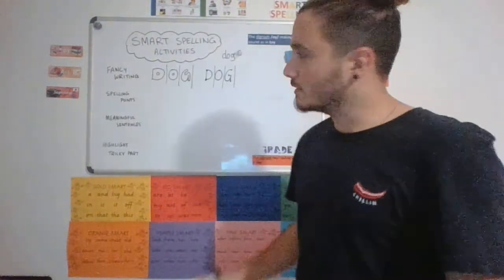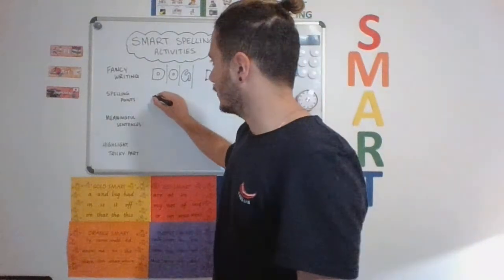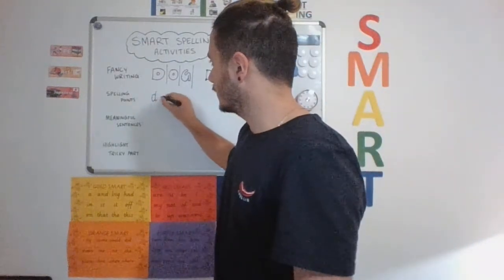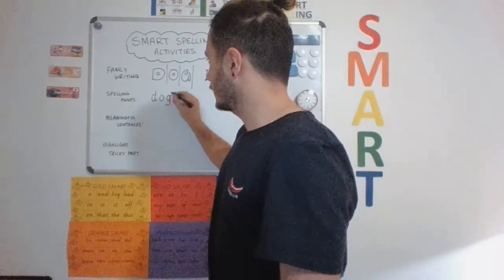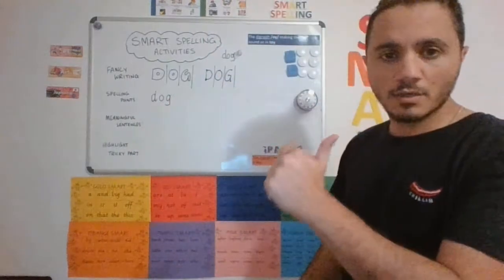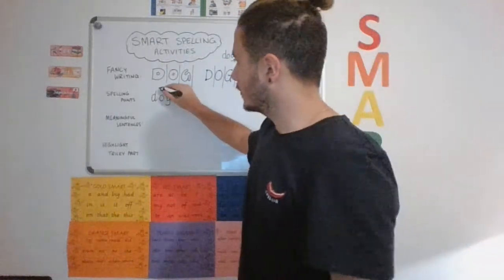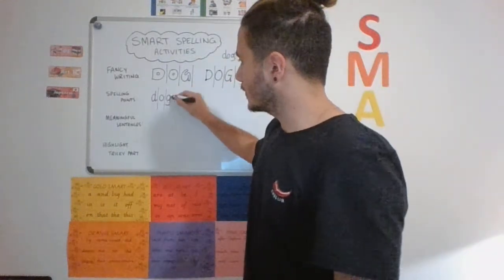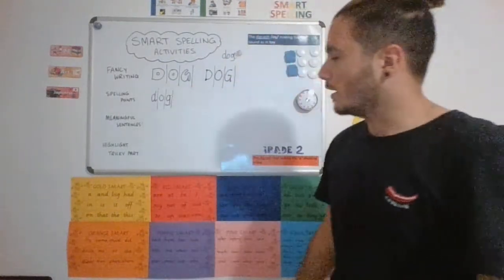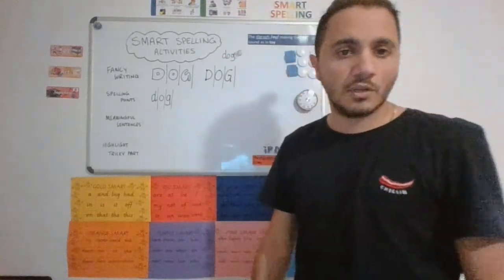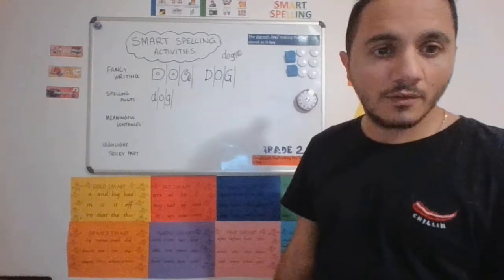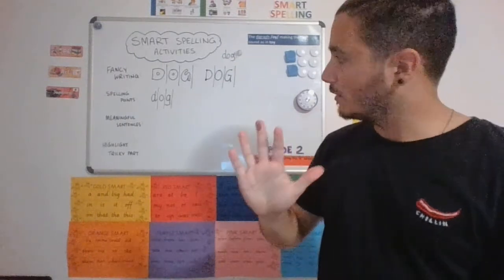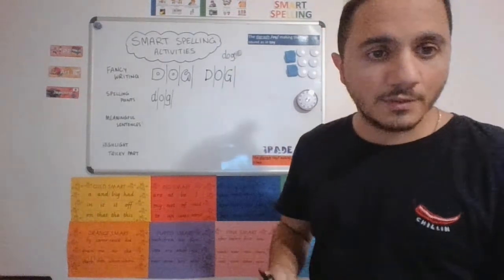All right, let's have a little bit of spelling points. Spelling points. I'm going to write the word and I'm going to split it up. And now for every graph, every graph is worth two points. Every digraph is worth five points. And a trigraph is worth ten points.